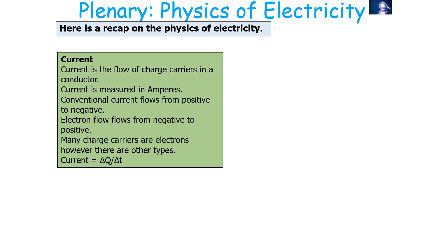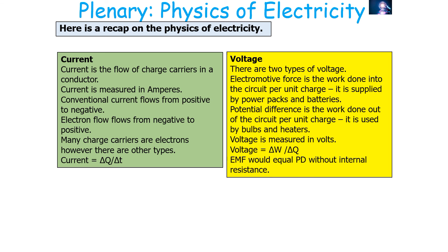To recap: current is the flow of charge carriers in a conductor, measured in amps. Conventional current flows from positive to negative, yet electron flow goes from negative to positive. Many charge carriers are electrons, but there are other types, and current equals change in charge over change in time. For voltage, there are two types: the electromotive force — work done into the circuit per unit charge, supplied by batteries and power packs — and potential difference — work done out of the circuit per unit charge, used by things such as bulbs and heaters. Both voltages are measured in volts and given by the equation work done over charge.